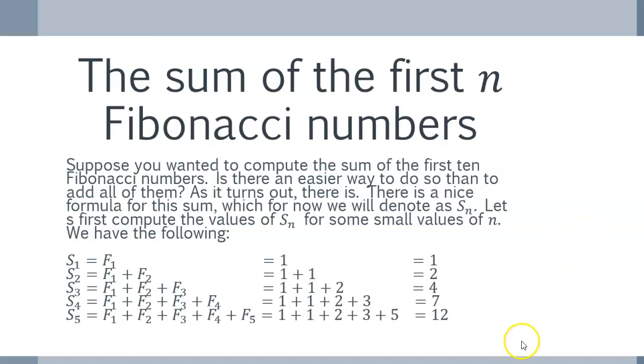So, let's just look at the first few S1. So, S1 is just the first Fibonacci number, which is 1. I'm not too excited, but then S2 is F1 plus F2, which is 1 plus 1 or 2. S3 is the sum of the first 3, which 1 plus 1 plus 2 is equal to 4. S4 is the sum of the first 4, which is equal to 7. S5 is the sum of the first 5, which is equal to 12.